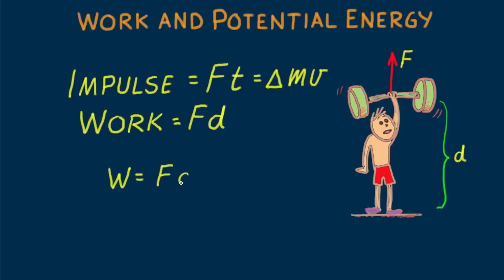According to the equation W equals FD, if you lift twice the load the same distance, you do twice as much work on the barbell. Or if you lift twice the load twice the distance, that's two-twices, you do four times the work on the barbell.